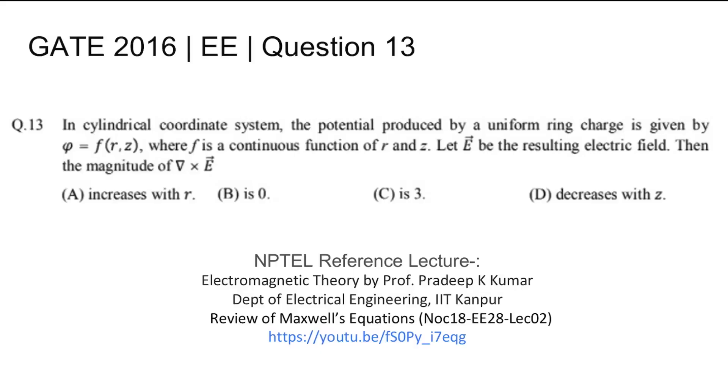This is GATE 2016 electrical question number 13. In cylindrical coordinate system, the potential produced by a uniform ring charge is given by phi equal to a function of r and z, where f is a continuous function of r and z. Let E be the resulting electric field, then find the magnitude of curl of E.